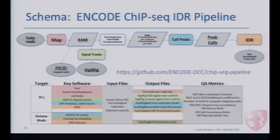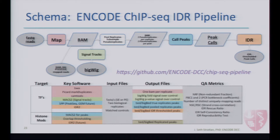Something we haven't talked about yet but is very important is that deploying pipelines in the way that we have allows us to generate all sorts of quality assurance metrics. All ENCODE experiments have target read depths, target library complexities, and goals for data quality that must be reached for experiments to be accessioned and distributed as ENCODE products. These QC metrics will also be important for you when you run your experiments through these pipelines, because you can compare your data to ENCODE data and see how it stacks up.